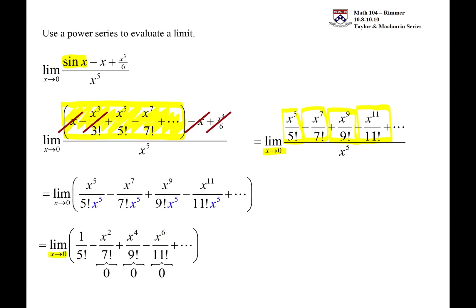All of these terms that have x in them then are going to go away. Each of them will go to zero, leaving us with just the first term, which is 1 over 5 factorial, which is 1 over 120.